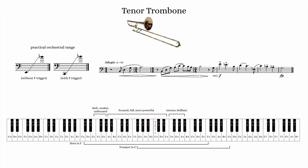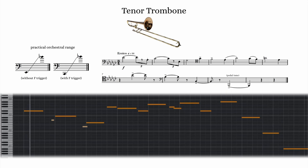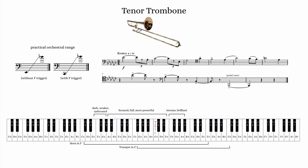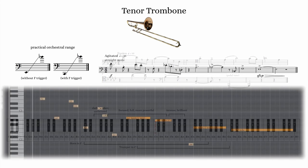Similar to the highest range of the trumpet, the highest tenor trombone notes sound intense and brilliant. It's more difficult to control the notes in this range, and more difficult to play softly. As was the case with the trumpet family, adding mutes can be a very effective timbral change, and many of the same types of mutes are available for trombone, including straight mutes, cup, harmon, bucket, and plunger. Here's an example of the straight mute on tenor trombone.